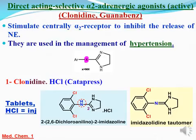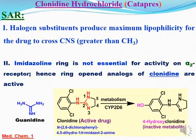هنا الـ aryl بتكون substituted بـ substituents lipophilic لـ CNS penetration، عشان كده بتكون عبارة عن 2,6-dichloro phenyl. وده drug اسمه clonidine. يبقى الـ clonidine ده عبارة عن 2,6-dichloro anilino imidazoline. الـ clonidine ده ممكن يترسم في صورة imidazoline tautomer أو في صورة imidazolidine tautomer. الـ 2,6-dichloro substituent يوفر maximum lipophilicity needed for the drug to cross CNS greater than the vessel. كمان الـ imidazoline ring not essential for activity.